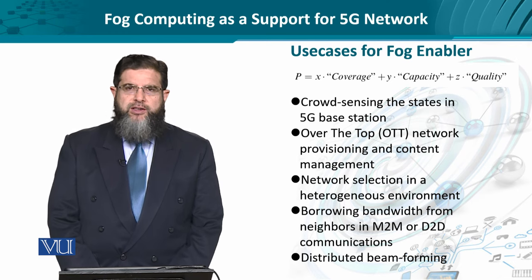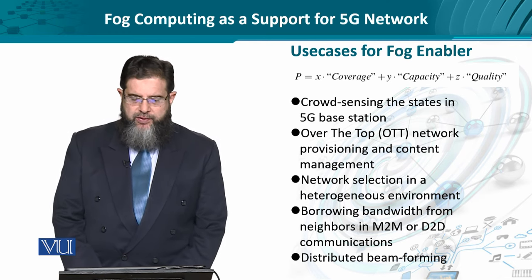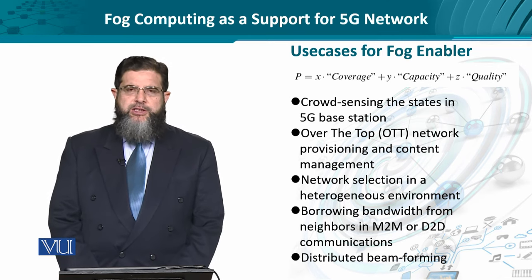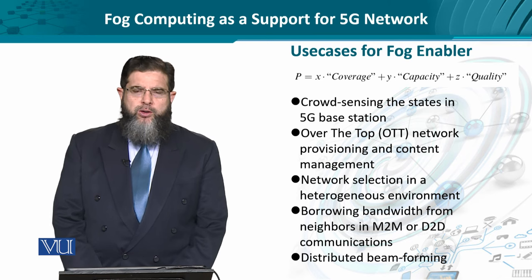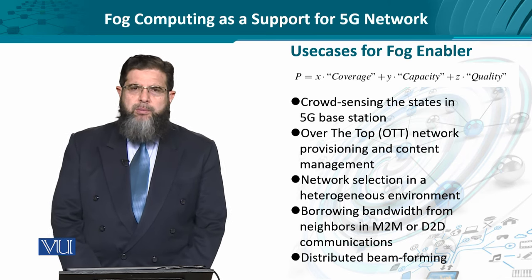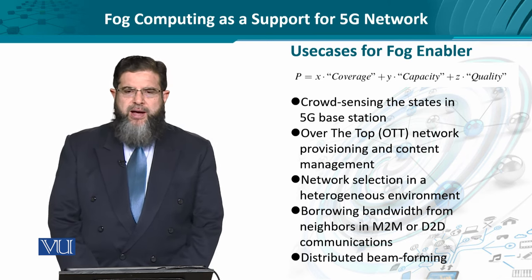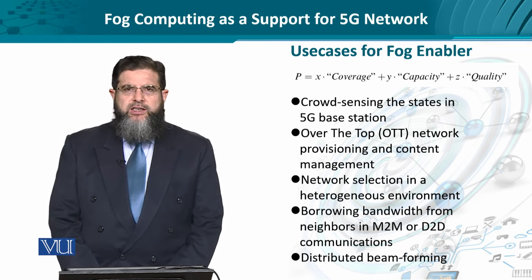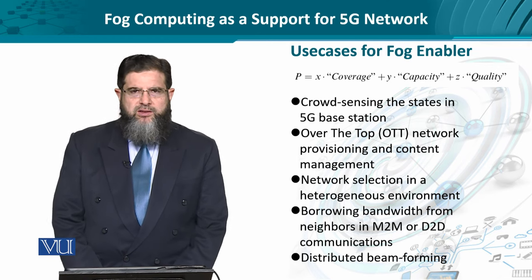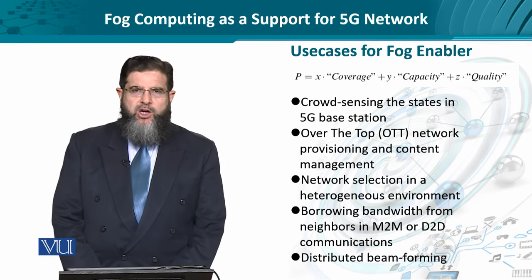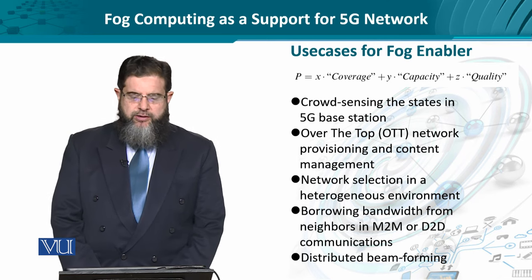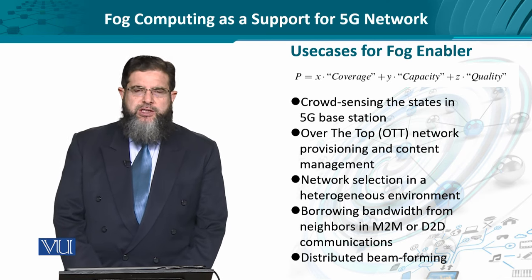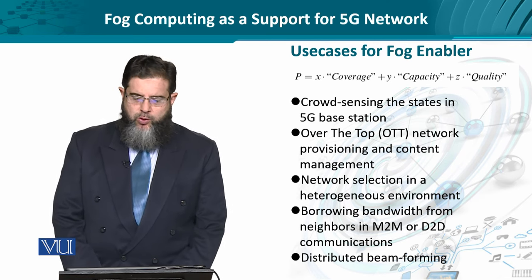I'm going to refer you to the research paper from which I have quoted these. The first use case is cloud sensing the base station through active probing, through a packet train, and through passive received signal strength indicator measurement. The fog computing devices would interact with each other and with the environment to update the status of certain base stations, like eNodeBs in an evolved packet core environment.